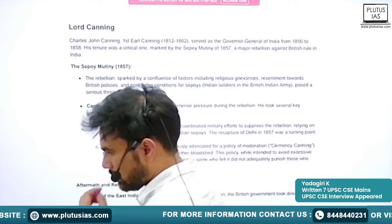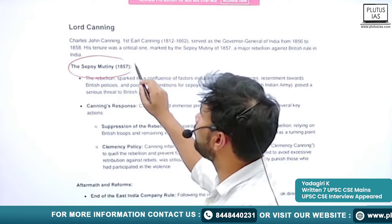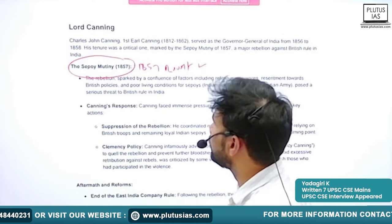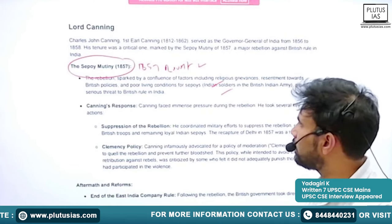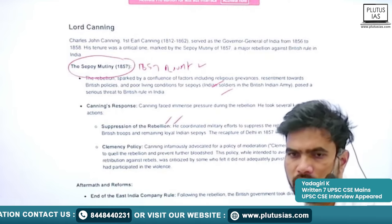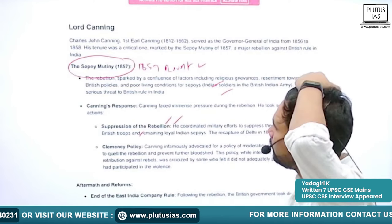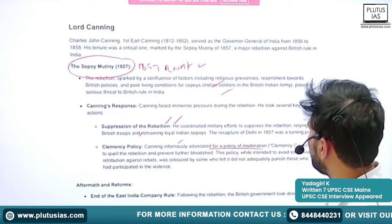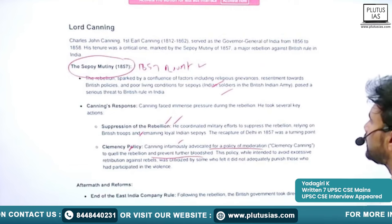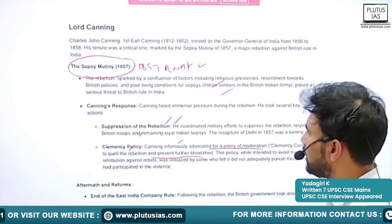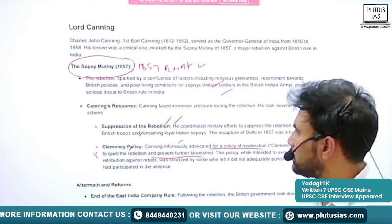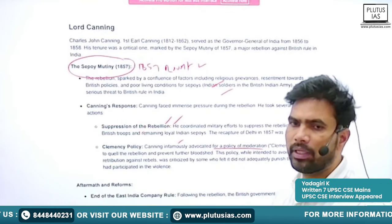Lord Canning was the next Governor General of India. During his time the Sepoy Mutiny — the 1857 revolt — occurred. He was successful in suppressing the revolt. He brought in a clemency policy — he advocated for a policy of clemency to quell the rebellion and prevent further bloodshed. This policy earned him the nickname 'Clemency Canning.' It somewhat favored Indians but was criticized by Britishers in Britain. During this time the rule of the British East India Company came to an end, and Indian territories were directly taken under the control of the British Crown.